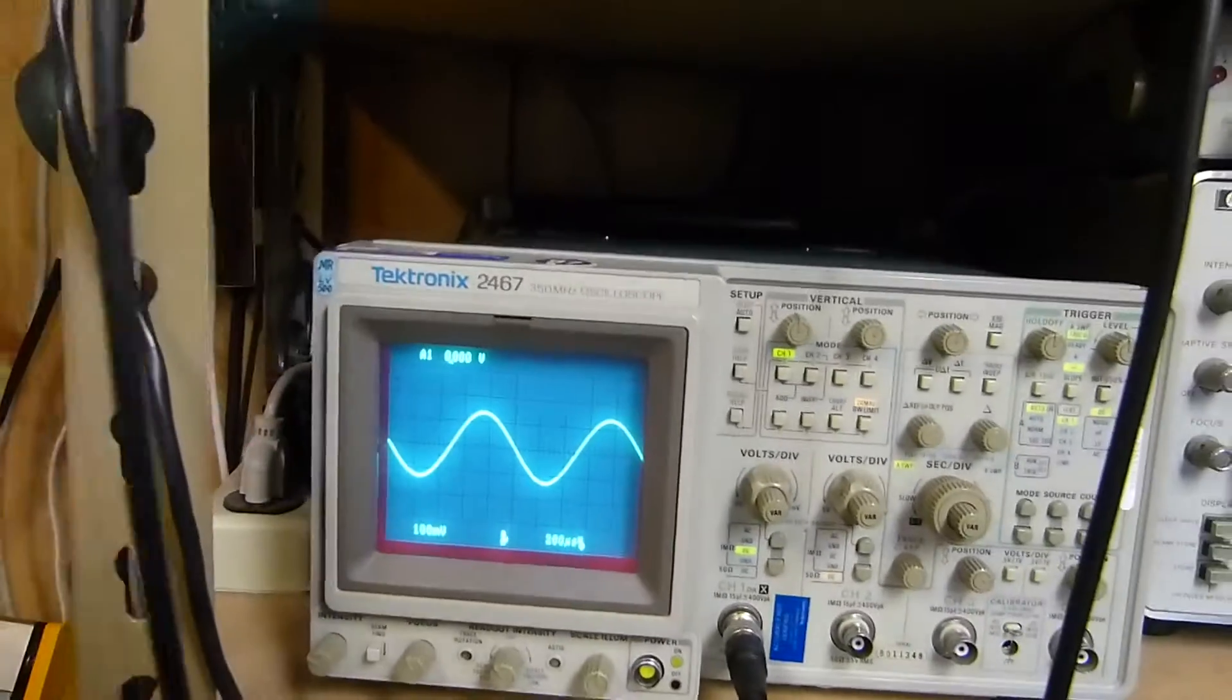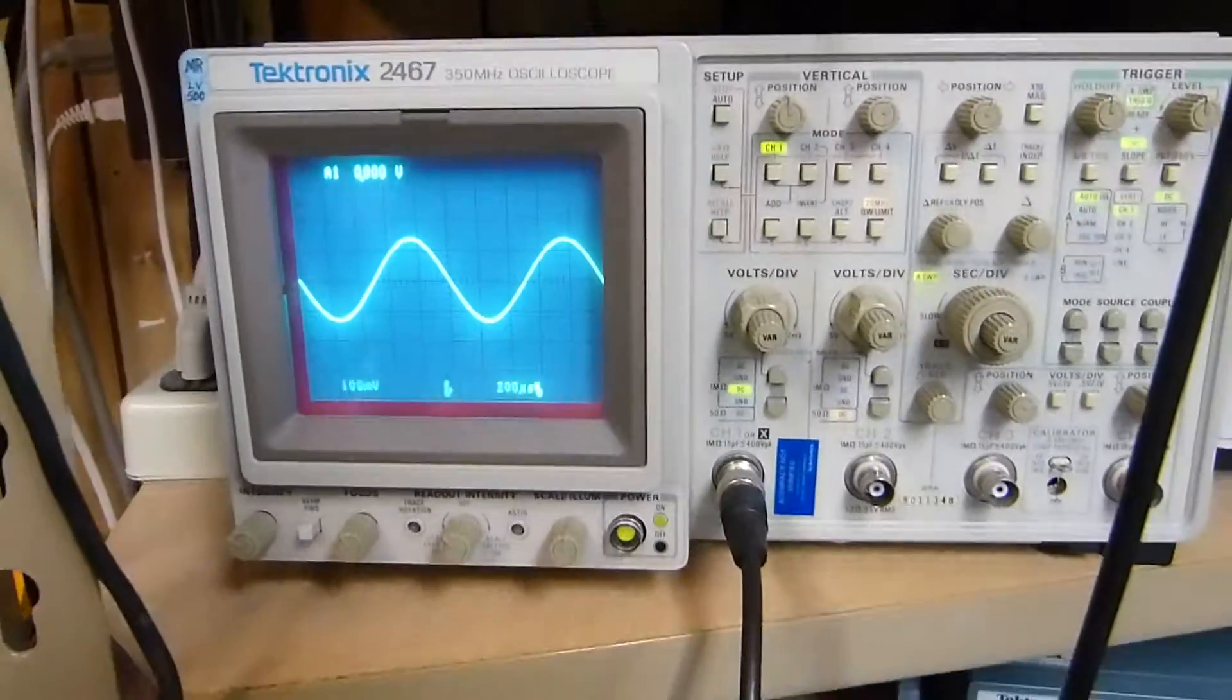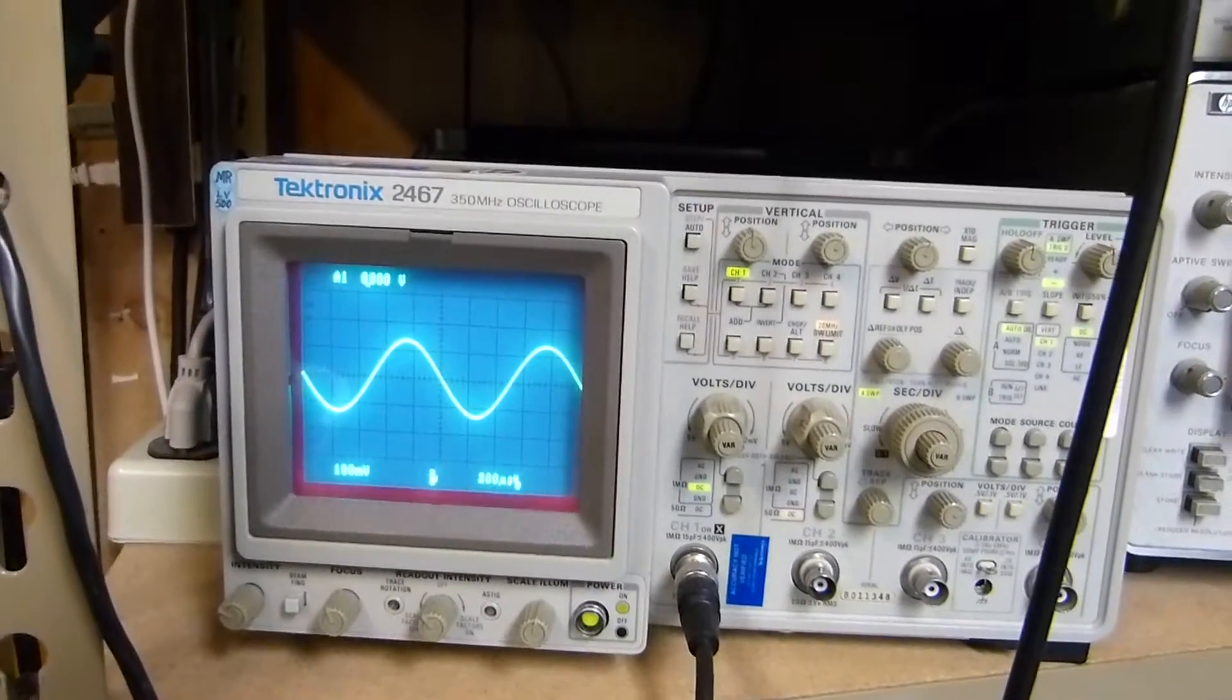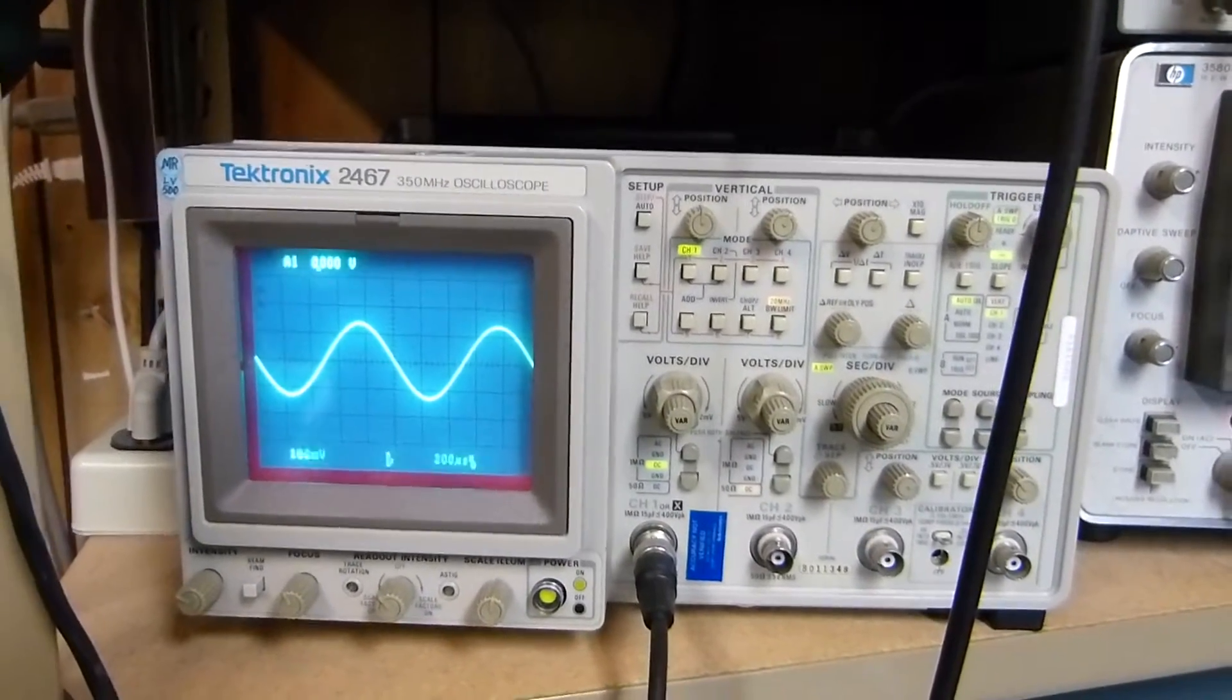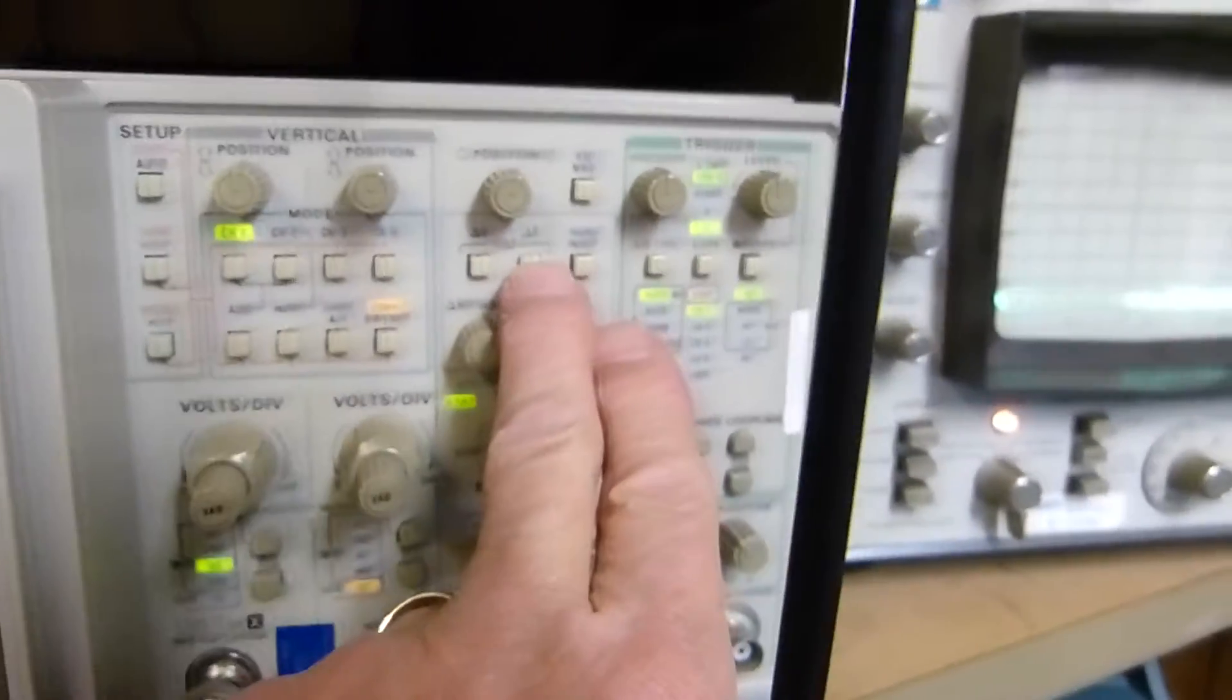This is a beautiful Tektronix 2467 scope. It's a 350 megahertz scope. It's got a brain, it's a little bit microcontrolled. Here's some really neat things about it.